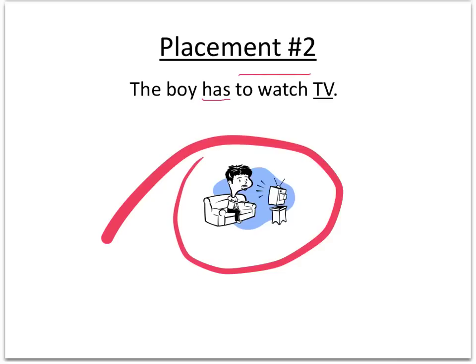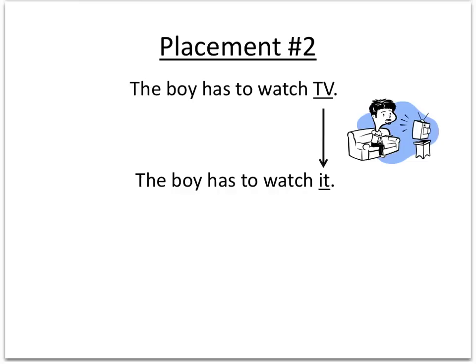Let's keep going. The boy has to watch TV. We identified has and to watch as the verbs in the sentence, but has is the action. Now let's ask ourselves who's doing the action — the boy is doing the action, so he's the subject of the sentence. And then let's look at what has to be watched — that's the TV. So that's our direct object of the sentence.